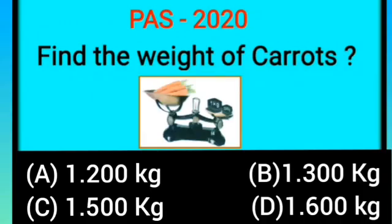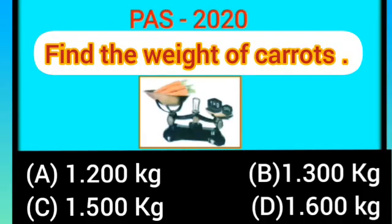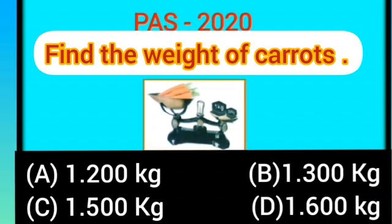Today's best question is: find the weight of carrots. Here we have 4 options. Look at the picture carefully — at one side there are carrots, and on the other side there are 1 kg and 500 grams weight. It means the weight of carrots is 1 kg and 500 gram, which we can also write as 1.500 kilograms. So option C is the correct answer.